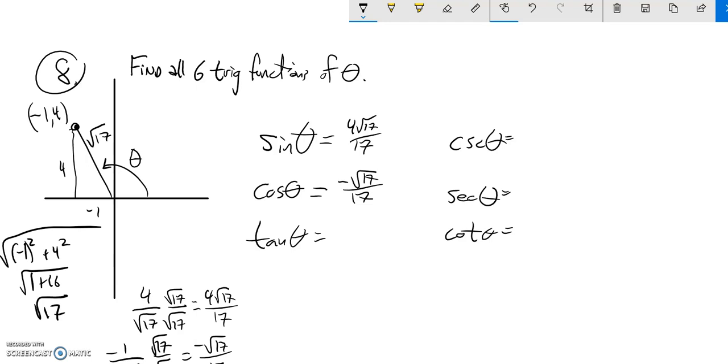Tangent is the steepness, the slope. So it's Y over X, rise over run. That's four over negative one, which is negative four.